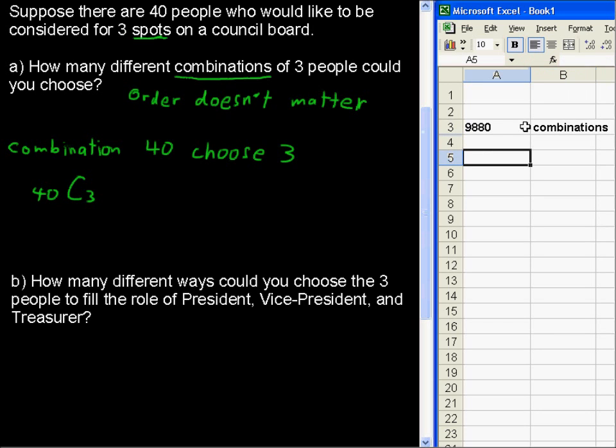Next problem, in B, we're being asked, How many different ways could you choose the three people to fill the role of President, Vice President, and Treasurer?